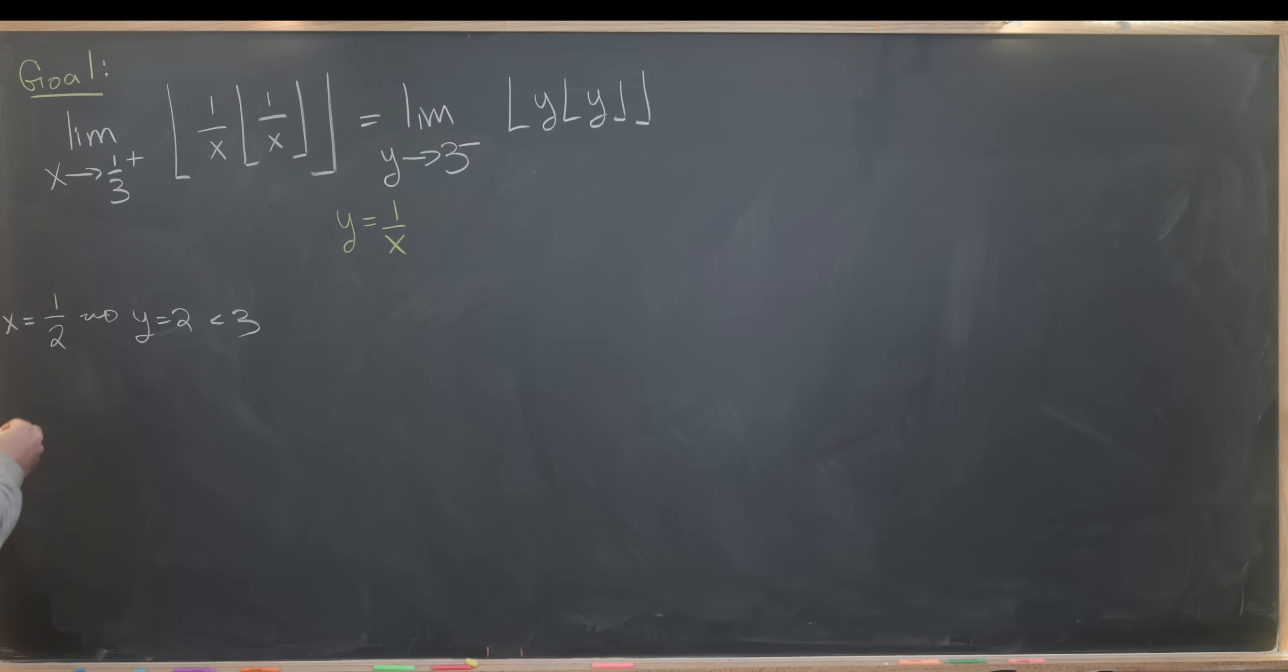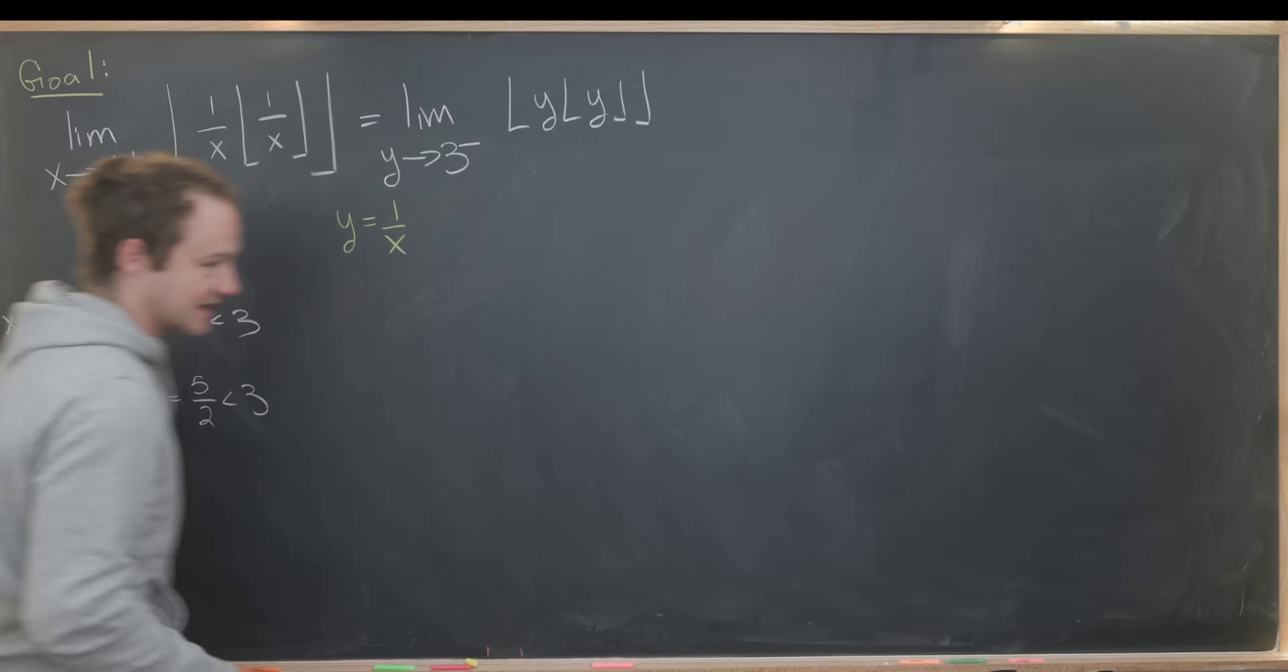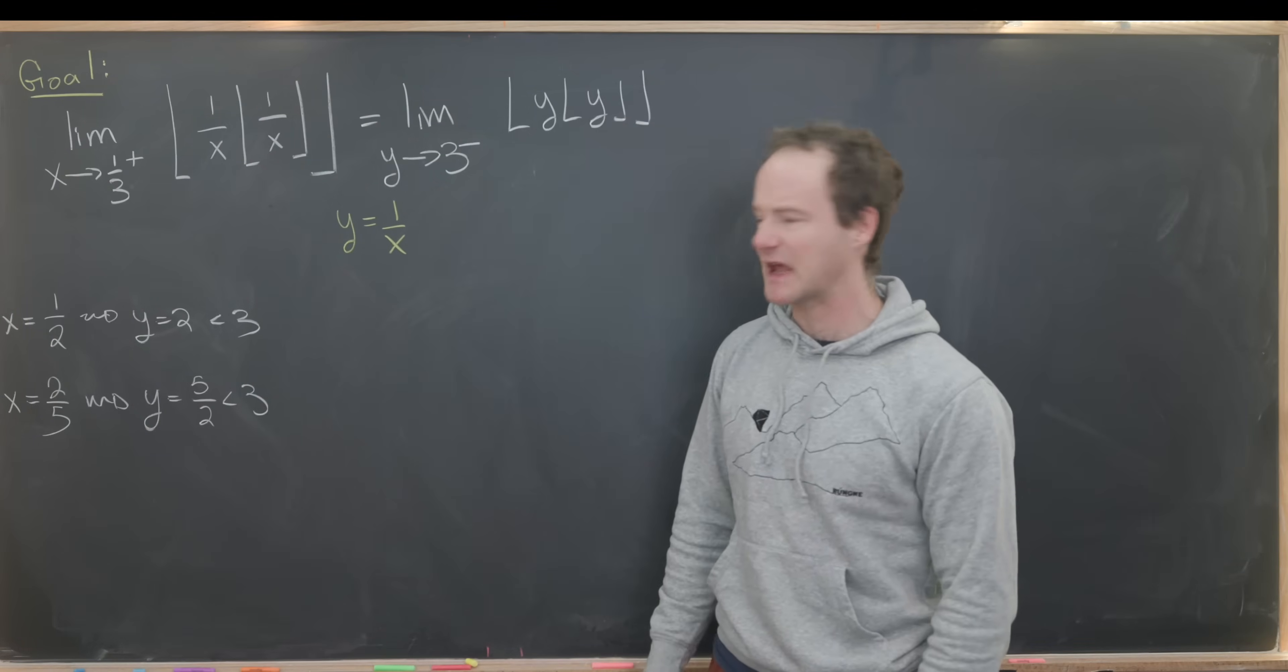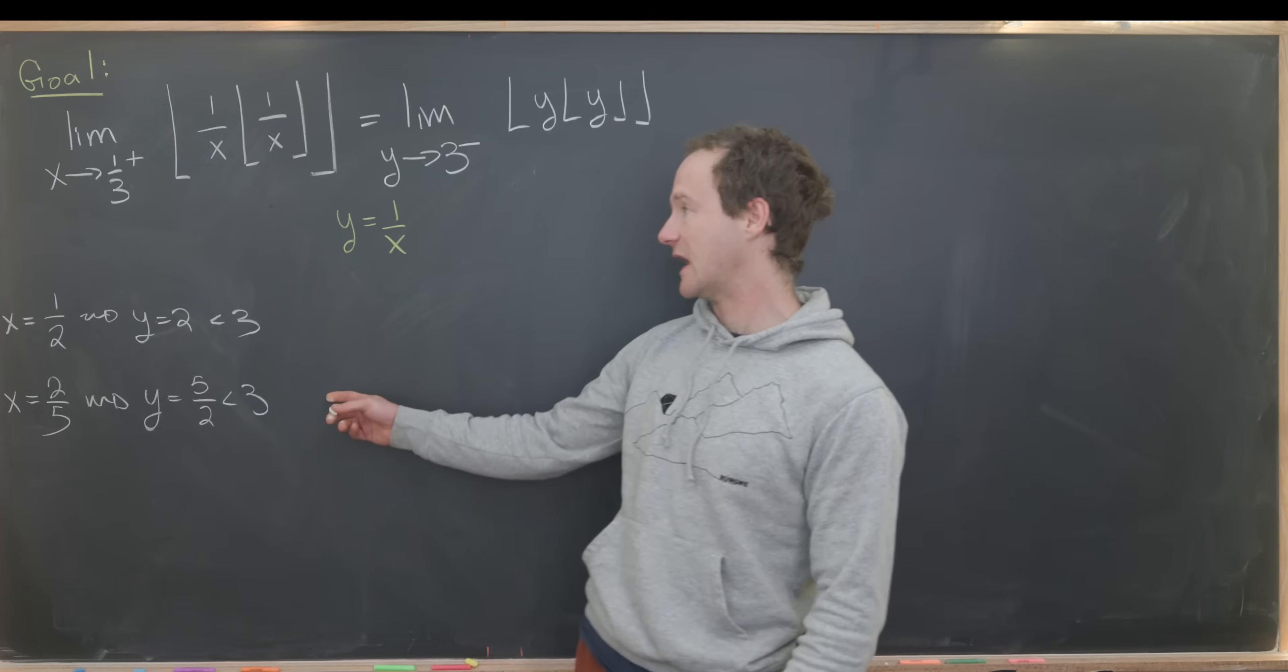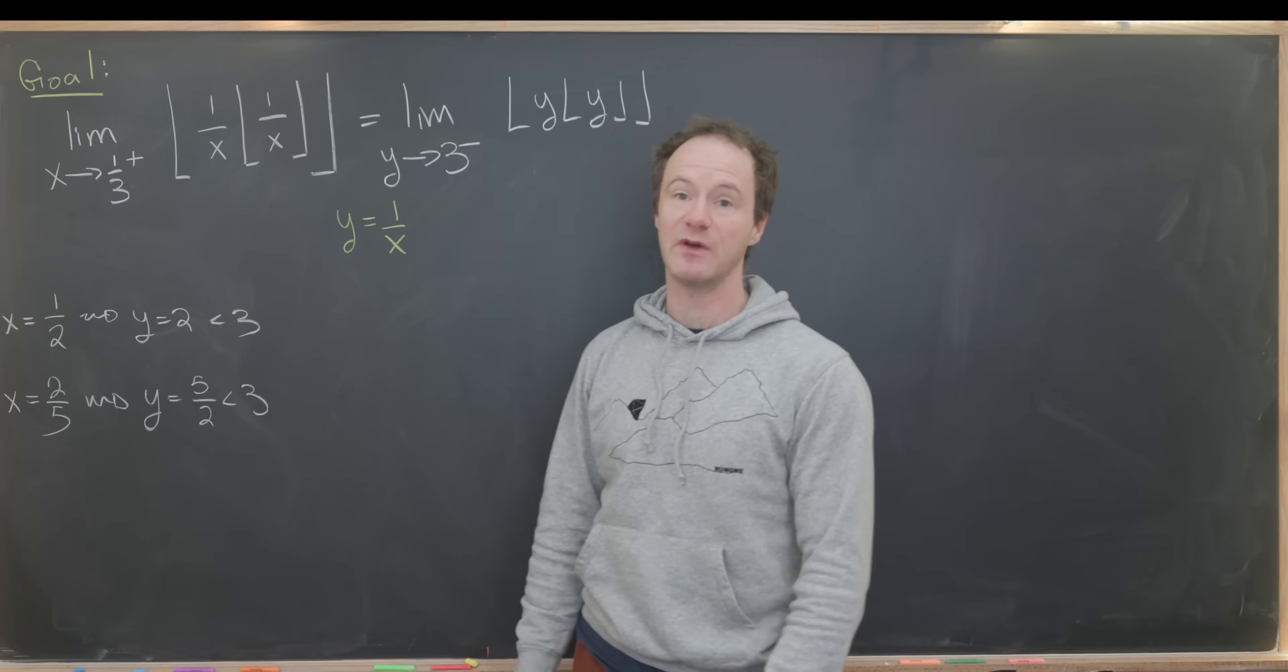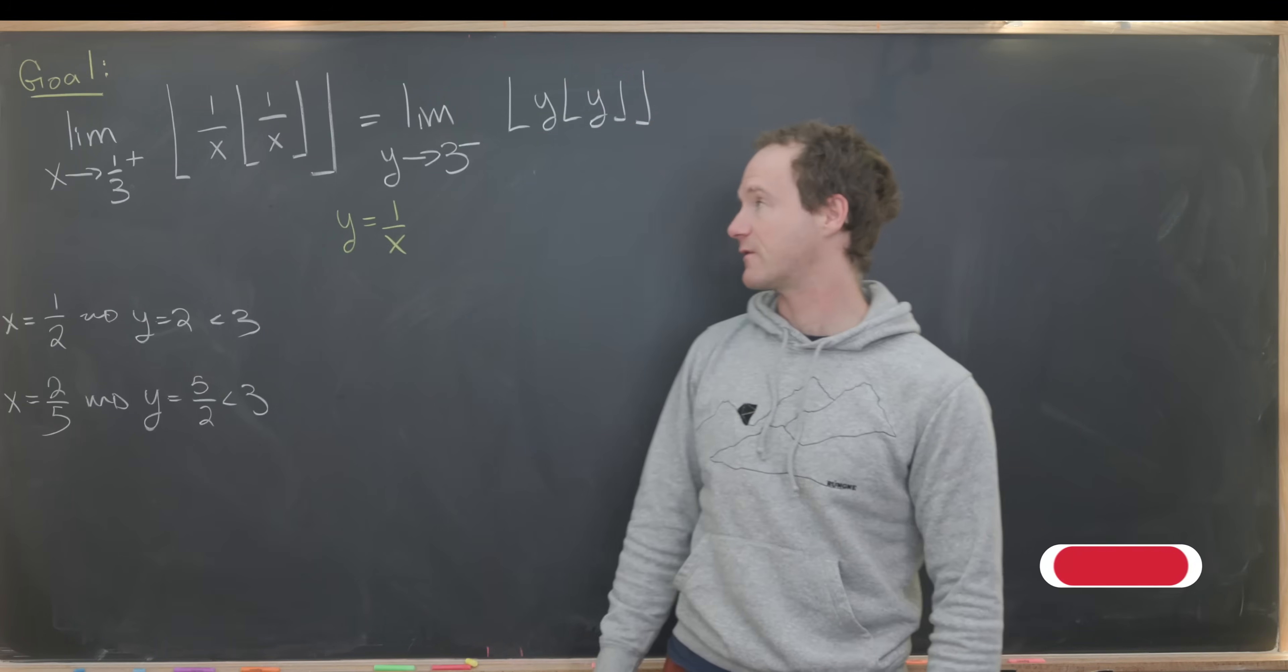Likewise, we could go even closer. Let's say x is equal to what's just a bit bigger than one-third? Maybe two-fifths. So two-fifths is to the right of one-third, but that corresponds to y equals five-halves, which is again less than three. That's a little hand-wavy, but we're going to do things really careful for the rest of this. I think it's okay to hand-wave our fact that the limit from above turns into a limit from below.